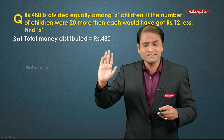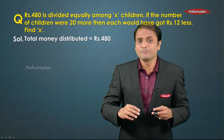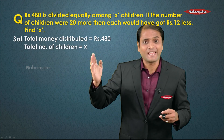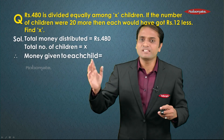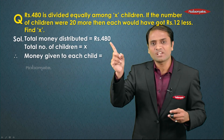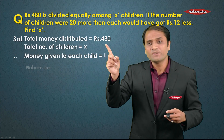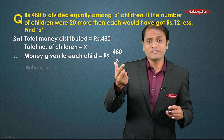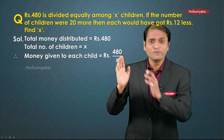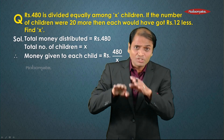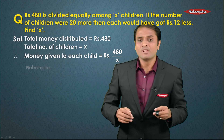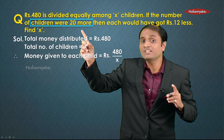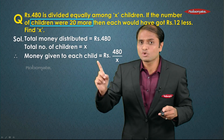In our solution: total money distributed equals rupees 480, and the number of children is x. So the money given to each child is rupees 480 divided by x. Treat this as a single number throughout the sum.